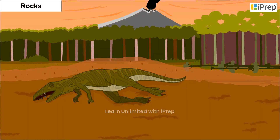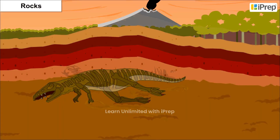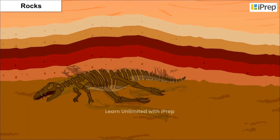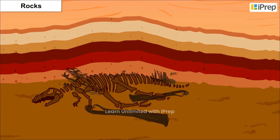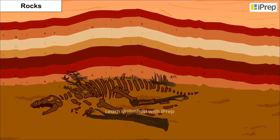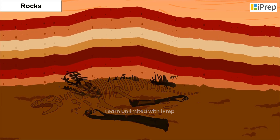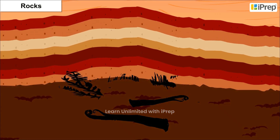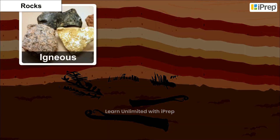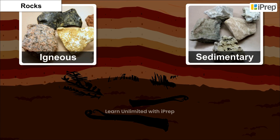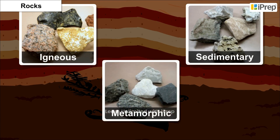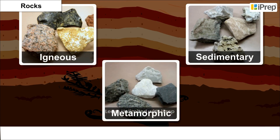When dead animals and plants remain between rock layers in the crust, they form fossils. The various types of rocks are igneous, sedimentary, and metamorphic.